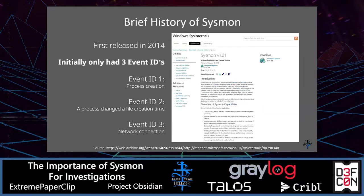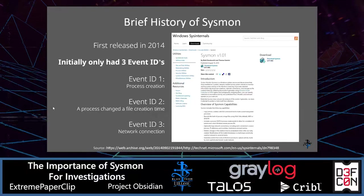A very brief history of Sysmon: it was first released in 2014 and initially only had three event IDs — Event ID 1 (process created), Event ID 2 (a process changed a file creation time), and Event ID 3 (network connection). This snippet was taken from the Web Archive.